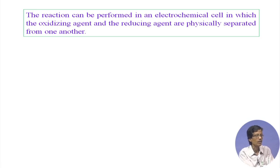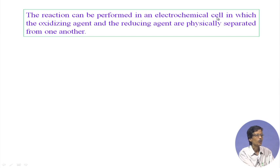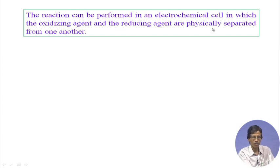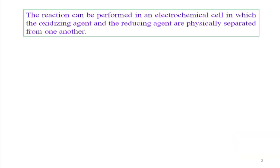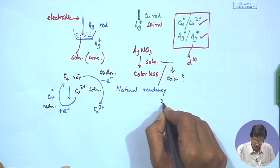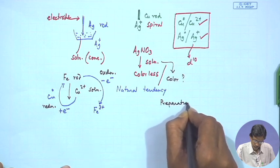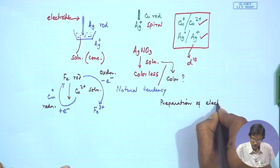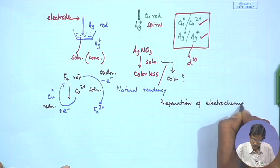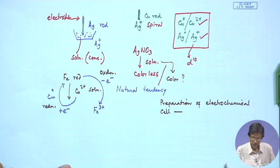So iron has a natural tendency for oxidation in solution, and copper can accept that electron for its reduction and deposition on the iron rod. The silver tree and copper deposition on iron demonstrate that particular electron transfer chemical reactions can be performed. We consider this an electrochemical cell because the electron transfer is taking place within a confined cell, like a biological cell, where the oxidizing agent and reducing agent are physically separated from each other.